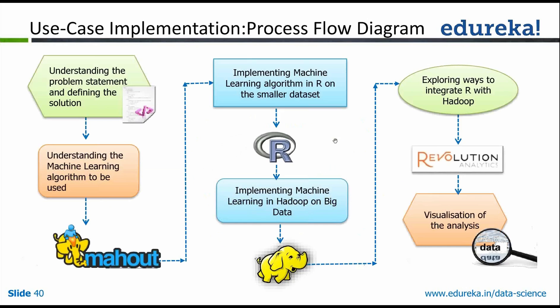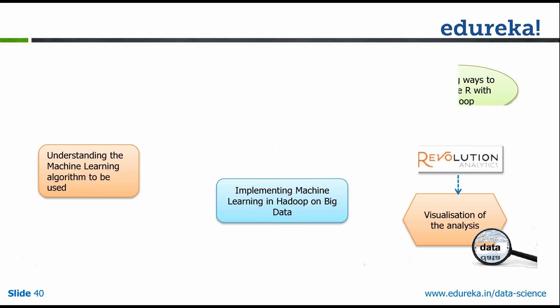This slide shows the process flow of a data scientist dealing with any particular problem. The first thing, given a dataset and a problem, is understanding the problem statement and defining the solution space. For example, if it's an email classification problem, your solution is building a classification model that predicts whether something is spam or not spam.